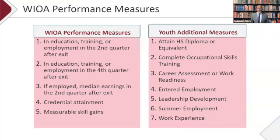Our program actually has two sets of pots of funding. One is applicable to the five WIOA performance measures — which include educational training, how people are being employed, how long they're employed, whether they're getting credentials, or whether there's a measurable change in their skills. Under the Federal Advisory Committee, the Native American Employment and Training Council has also identified some additional measures that are good for identifying whether investments in Native youth are successful.